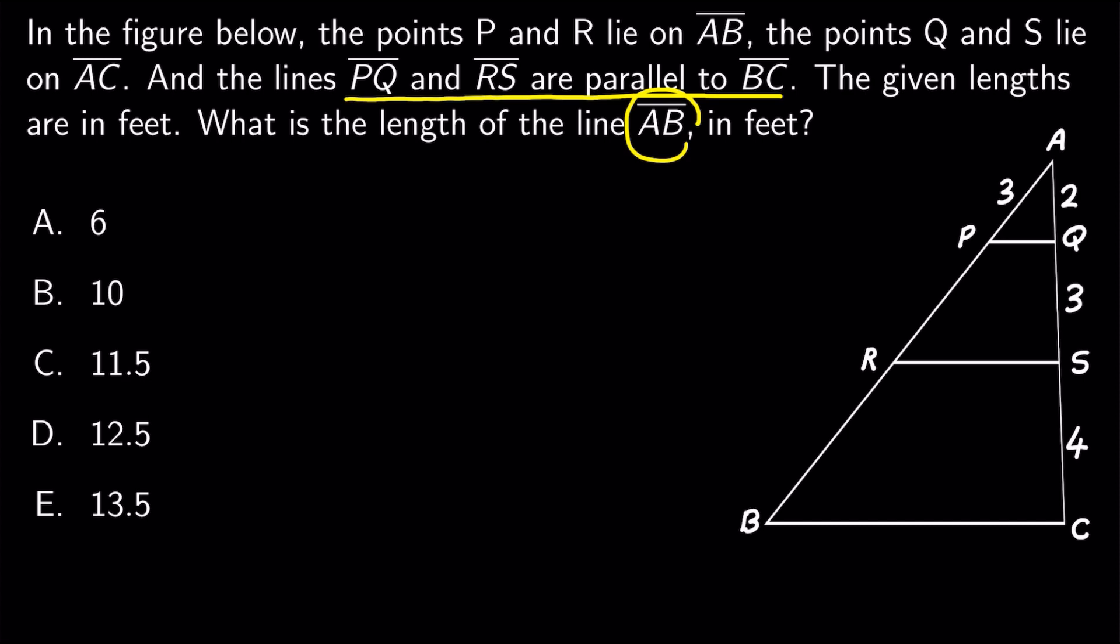Well, since the lines PQ and BC are parallel and the line AB is transversal, we have that the angles APQ and ABC are the same, and similarly the angles AQP and ACB are the same.